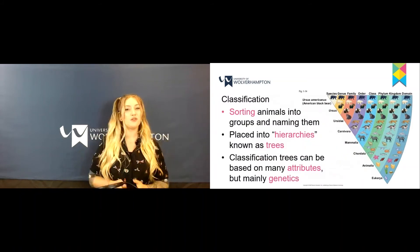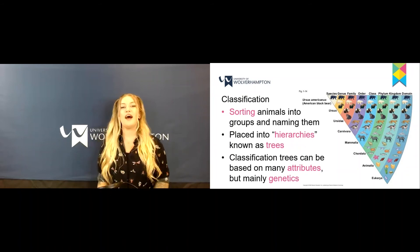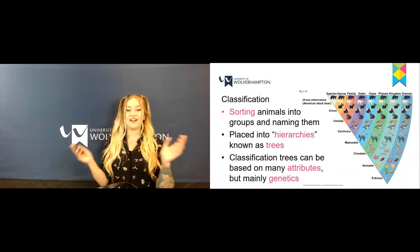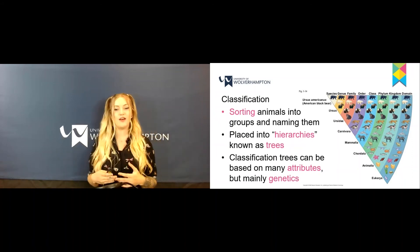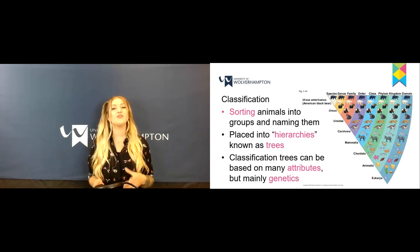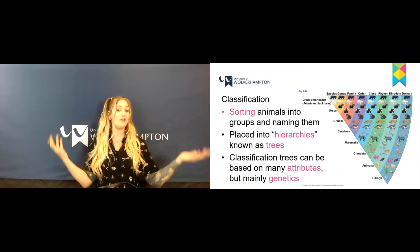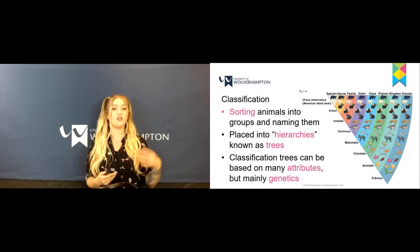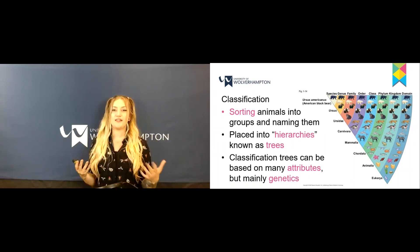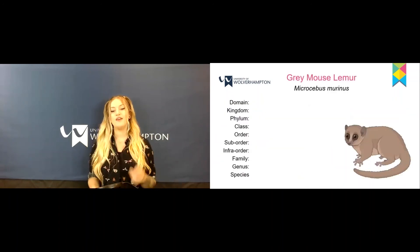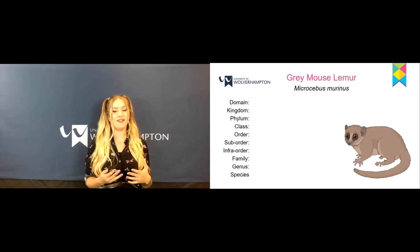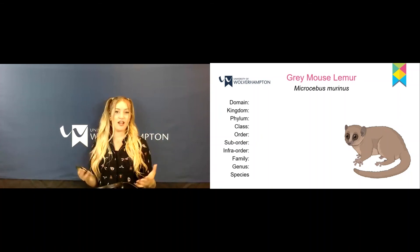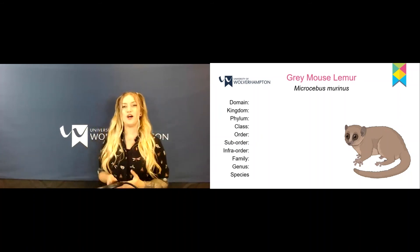So the last thing we're going to run through today is classification. You'll come across this in biology if you study animals, plants, or fungi — classification charts and trees. Classification is just sorting animals into different groups and making them into a hierarchy. Classification trees can be based on a variety of points such as morphology, but our main one we'll be looking at today is genetics. We have an example here of a grey mouse lemur, and on the left you'll see a list of all the different classifications that this grey mouse lemur can fit into. We'll start off with the top one: Domain.